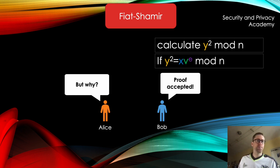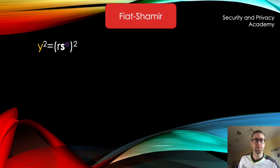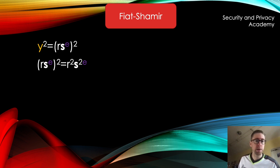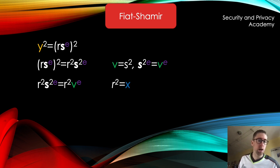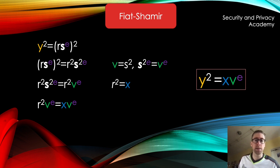Why does this work? Alice calculates y using the secret, so y squared equals (r times s to the power of e) squared. Dissolving the parentheses gives r squared times s to the power of 2e. Since the public number v was calculated as s squared, s to the power of 2e equals v to the power of e. And since x was calculated as r squared, the equation y squared equals x times v to the power of e holds — that's why Bob knows Alice knows the secret.